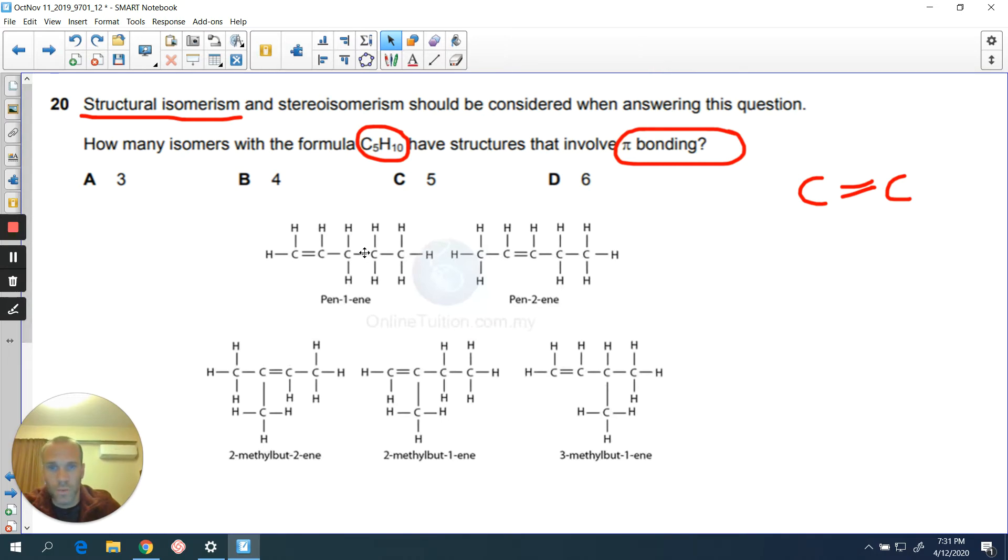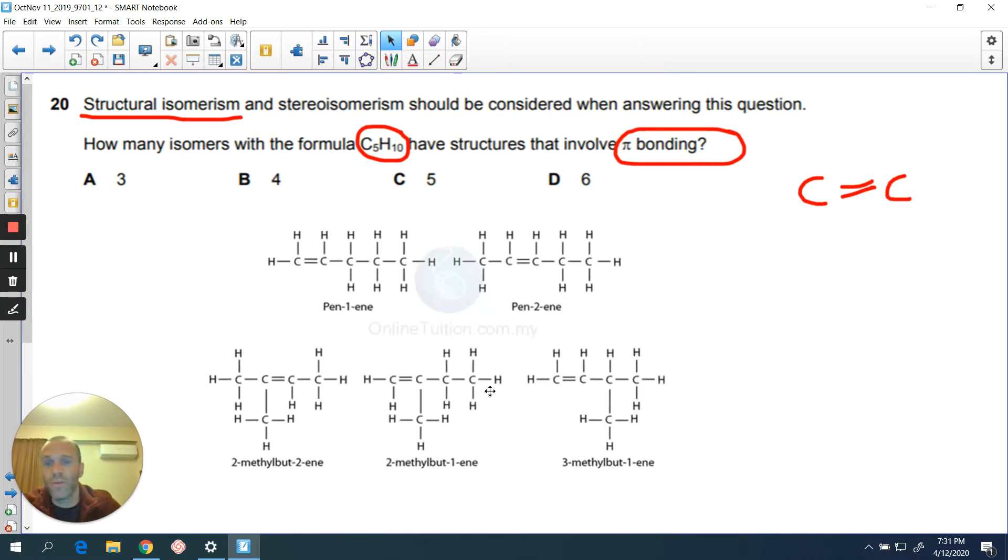So here we go. I've found the five different structural isomers.